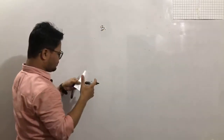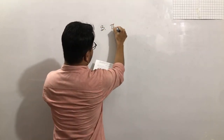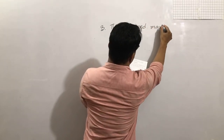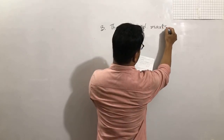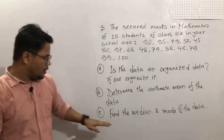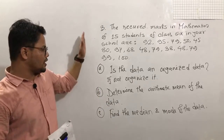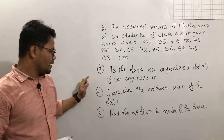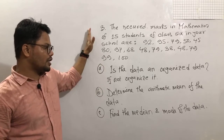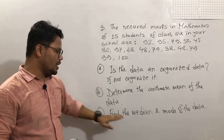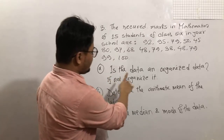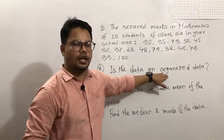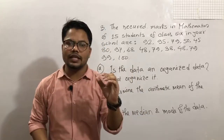This is Question No. 3. Find the median and mode of the data. How many students can do this answer properly? Please write your name in the comment section. It's a much easier question — we have already done this type. So first, about the data and information: is this data organized? Organized order means the information will be in ascending order or descending order.